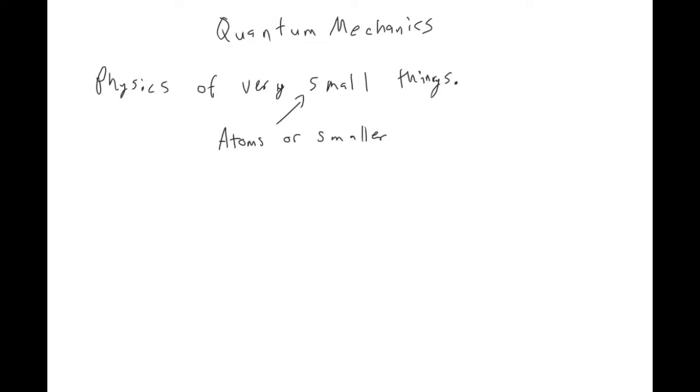What we did last time was special relativity, which was the physics of things that are moving very fast. Now we're doing the physics of things that are very small. Both special relativity and quantum mechanics are physics that we don't have a lot of experience with in our everyday lives, so some of the things we're going to talk about don't match with what we perceive in our everyday life.